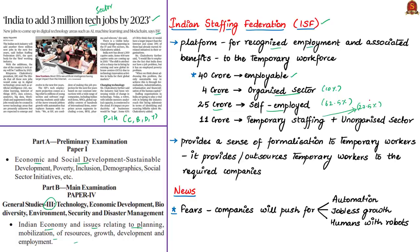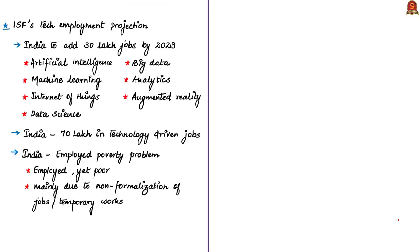The ISF platform provides formalization and recognition to flexible or temporary workers by outsourcing them to required companies. There were fears among millions of young technology students that companies will push for automation, jobless growth and replacing human resources with robots. But the tech employment projection by ISF states that India will add 30 lakh jobs in technology-driven areas by 2023. These new jobs would come in areas such as artificial intelligence, machine learning, internet of things, data science, analytics, big data and augmented reality or yet-to-emerge areas. Thus India will have around 70 lakh jobs in technology-driven areas by 2023.